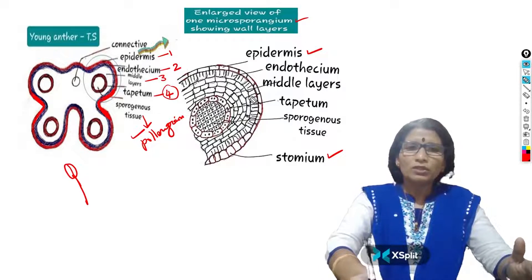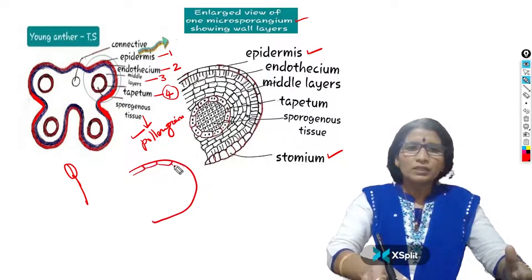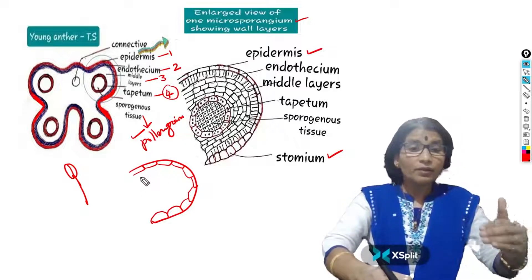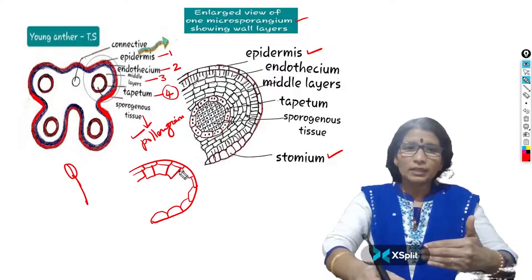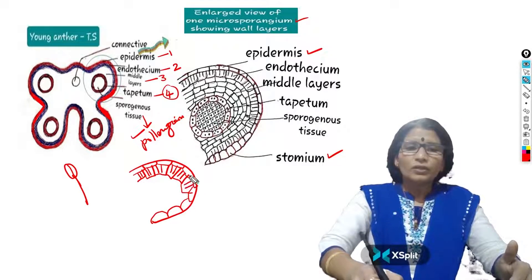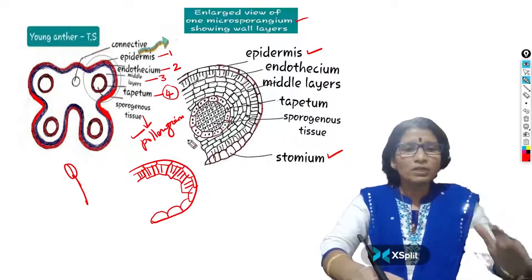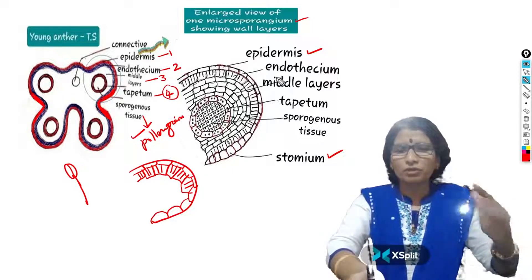The endothecium is also one layer in thickness. While drawing the diagram, the endothecium cells are radially somewhat enlarged towards the inside. On each cell you can see some lines called fibrous thickenings — meaning the cell wall is somewhat extra thick. Fibrous thickenings are present only on the endothecium; you cannot see these cell wall thickenings on any other cell. That is a special characteristic feature of endothecium.